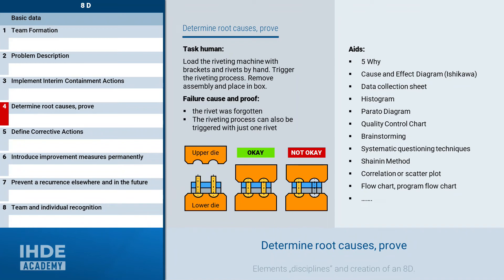After implementing mitigation measures, the root cause of the failure must be found and it must be proven that this was really the cause. There are numerous methods and procedures available as tools, some of which are listed here as examples: the 5-why method, the cause and effect diagram, the data collection sheet, histograms, Pareto analysis, quality control charts, brainstorming, systematic questioning techniques, the Shainin methodology, the correlation or scatter diagram, flow charts or program flow charts, and so on.